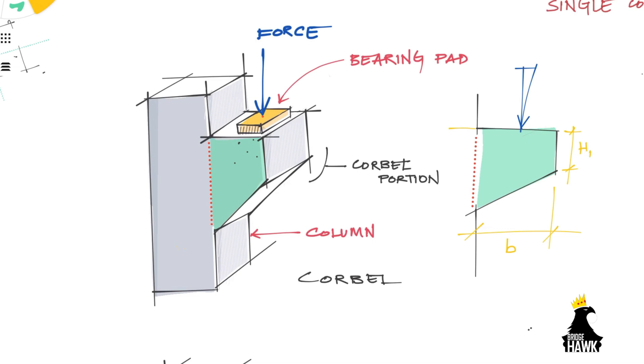The corbel is placed overhanging from a column. Upon the corbel is a bearing pad upon which the force acts perpendicularly and horizontally. The interface between the corbel and the column is the plane along which most failures take place.